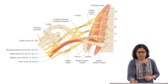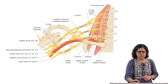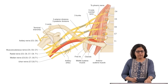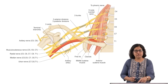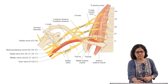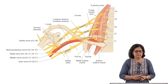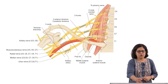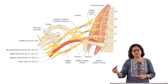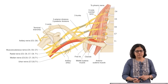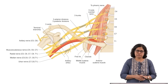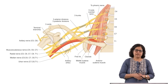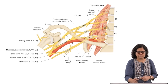After the clavicle, the entire brachial plexus passes between the clavicle and the first rib. The divisions are behind the clavicle. The cords form immediately after the brachial plexus leaves the clavicle, and as it approaches the axilla you see the individual nerves.